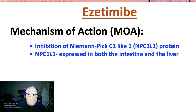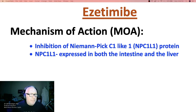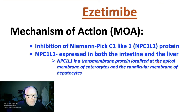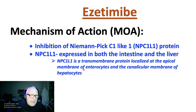Ezetimibe inhibits Niemann-Pick C1-like-1 protein, also known as NPC1L1. This protein is expressed in both the intestine and the liver. It's a transmembrane protein localized at the apical membrane of enterocytes and at the canalicular membrane of hepatocytes.